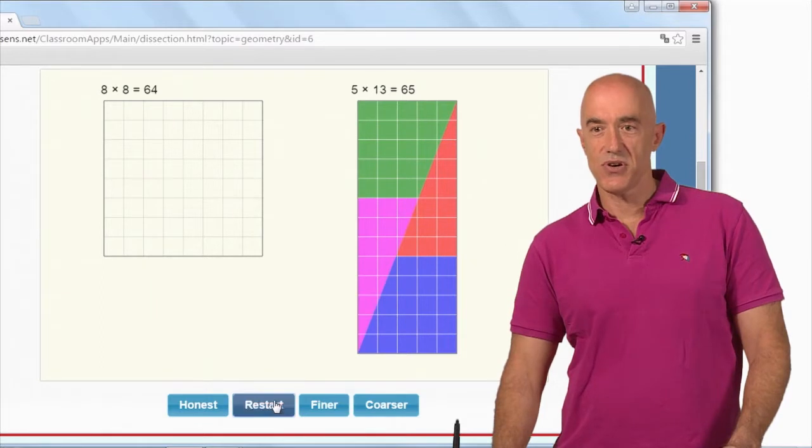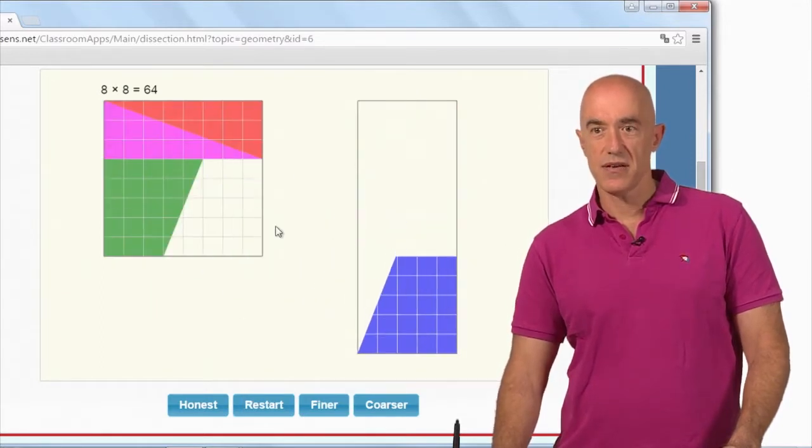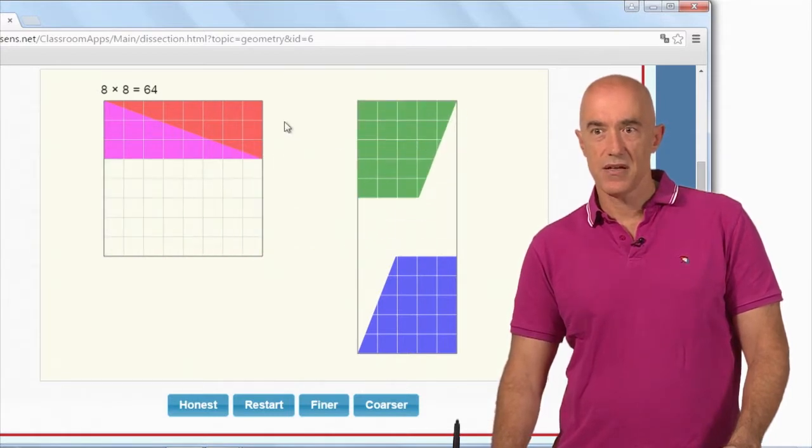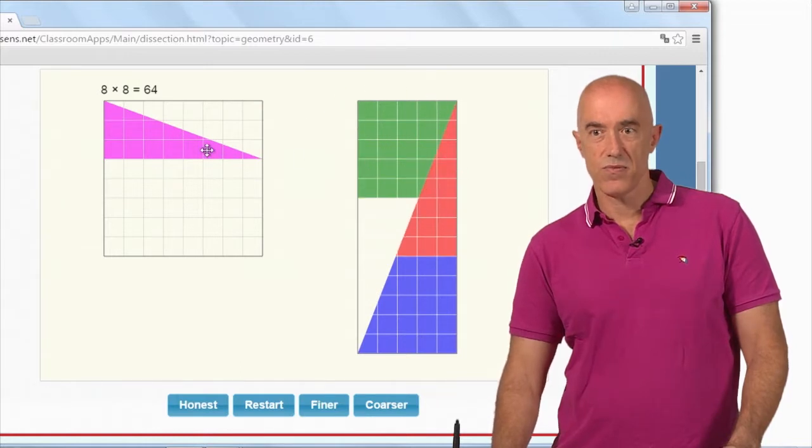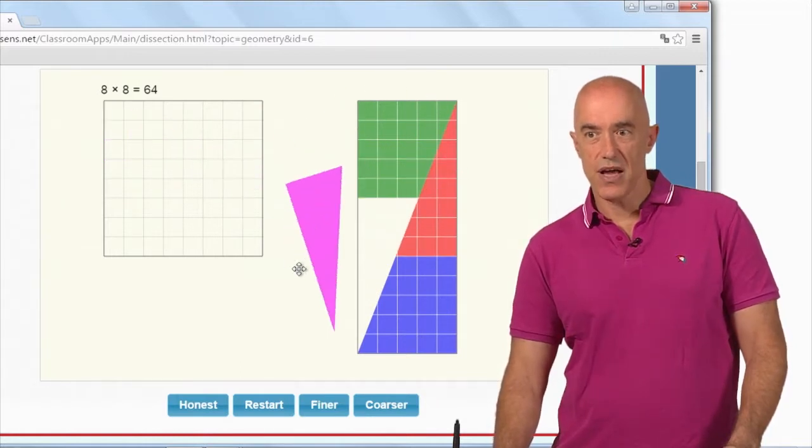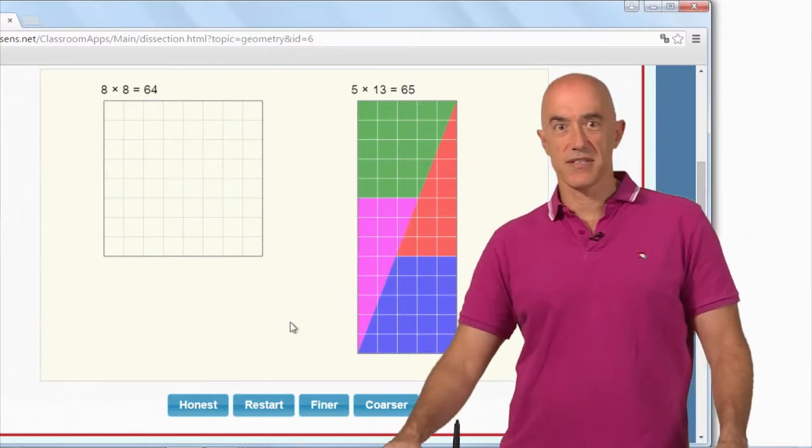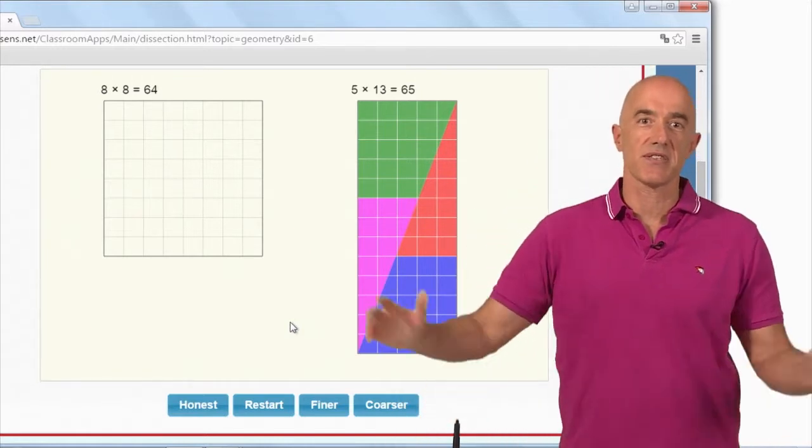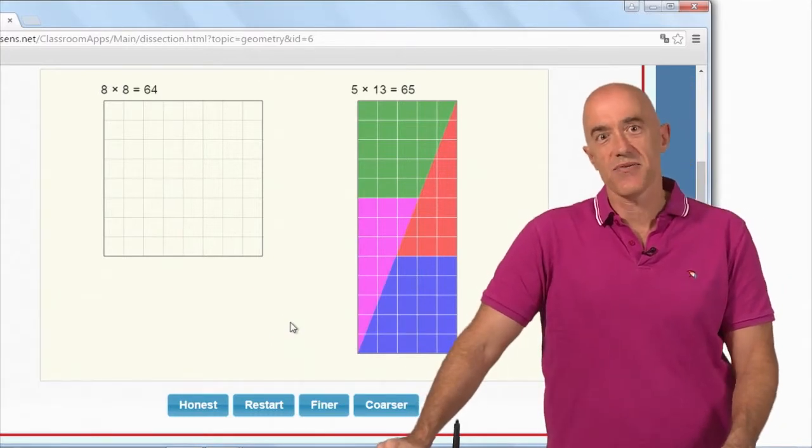Let me show you one more time. This one comes in here. This trapezoid goes up here. This triangle slips right in here perfectly, and this triangle slips right in here. 64 to 65. You can become a very wealthy man if you can make things of 64 quantity into things of 65 quantity.